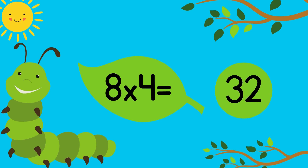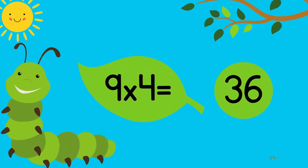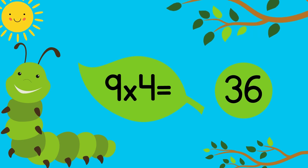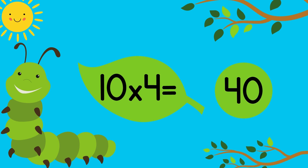8 times 4 equals 32. 9 times 4 equals 36. 10 times 4 equals 40.